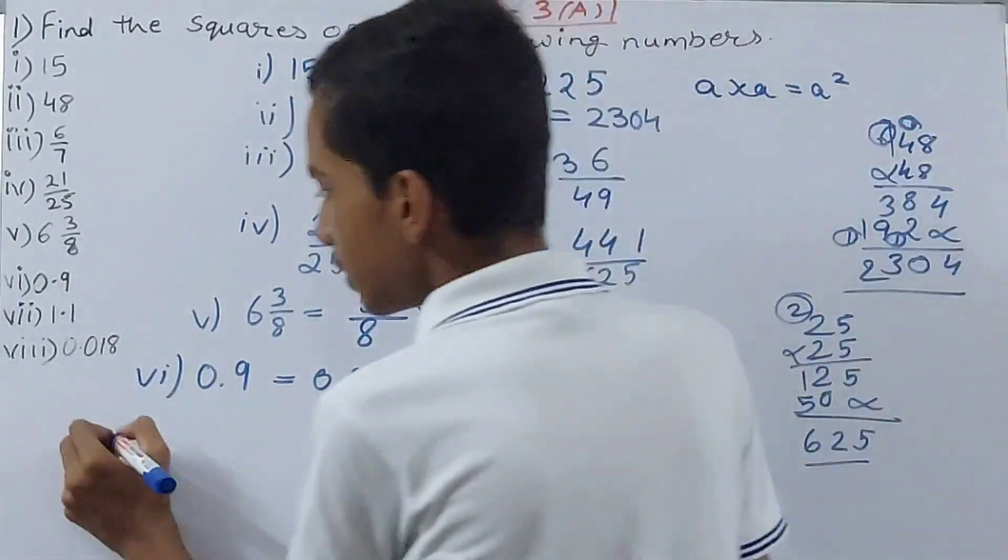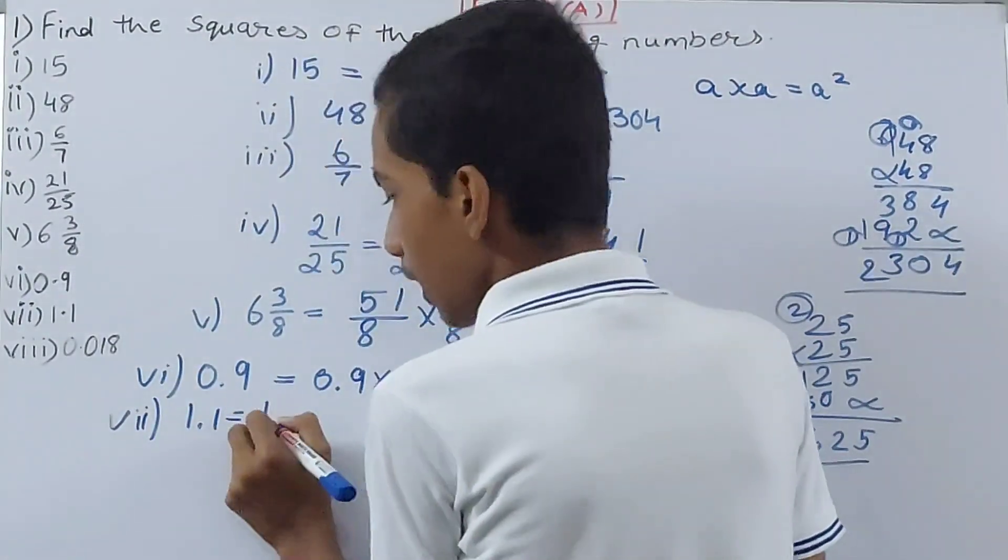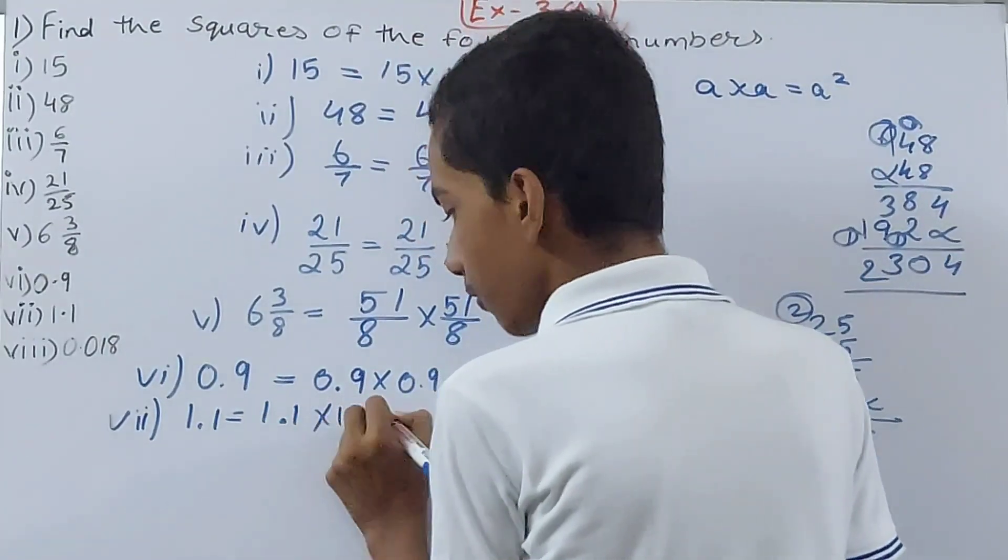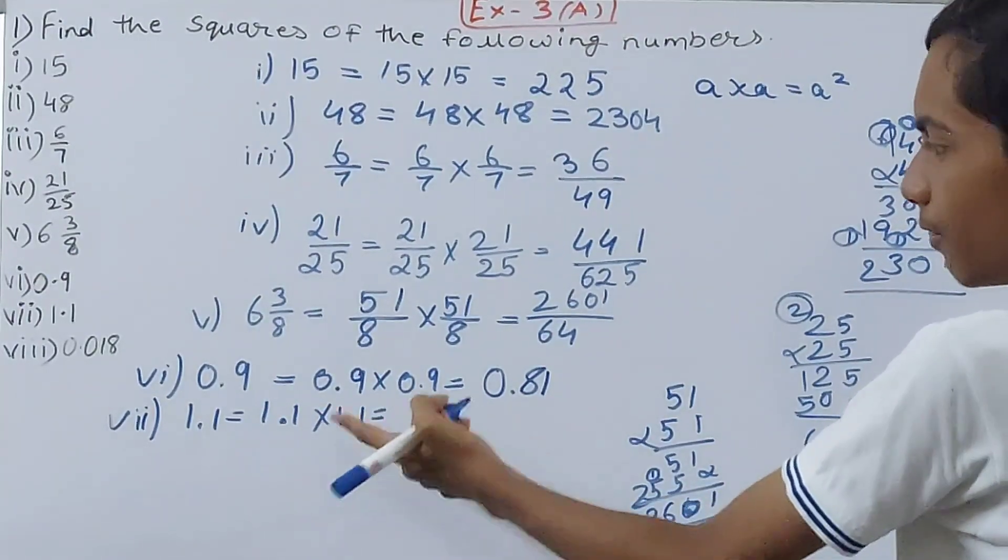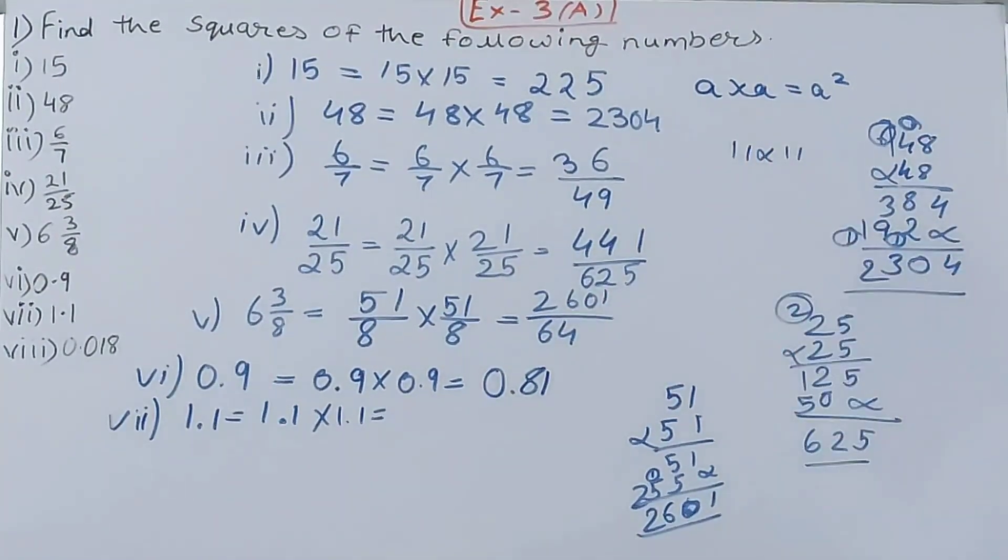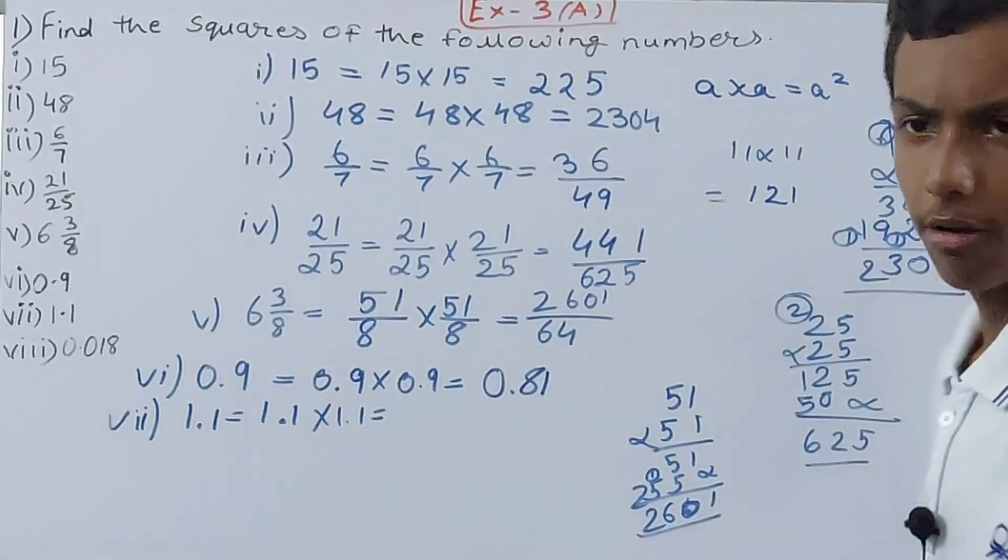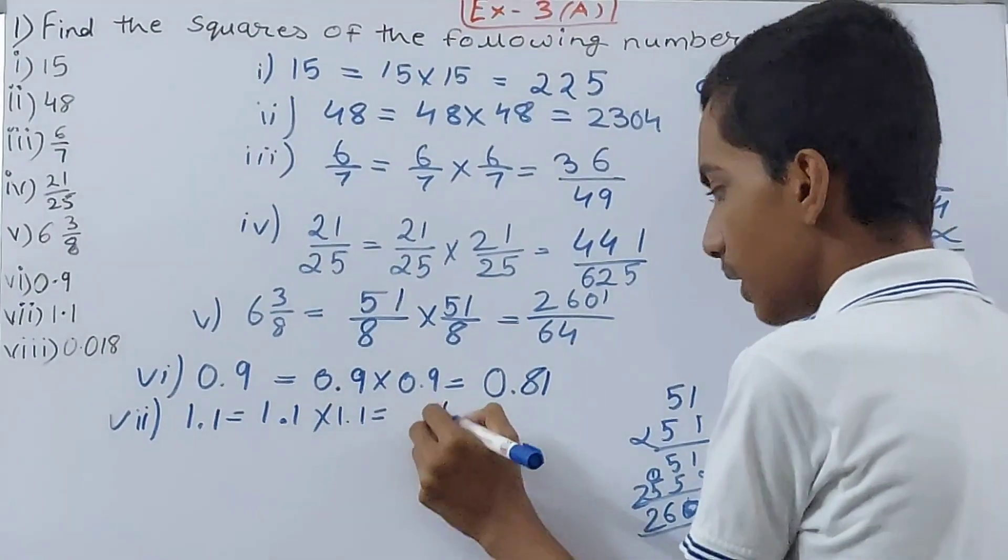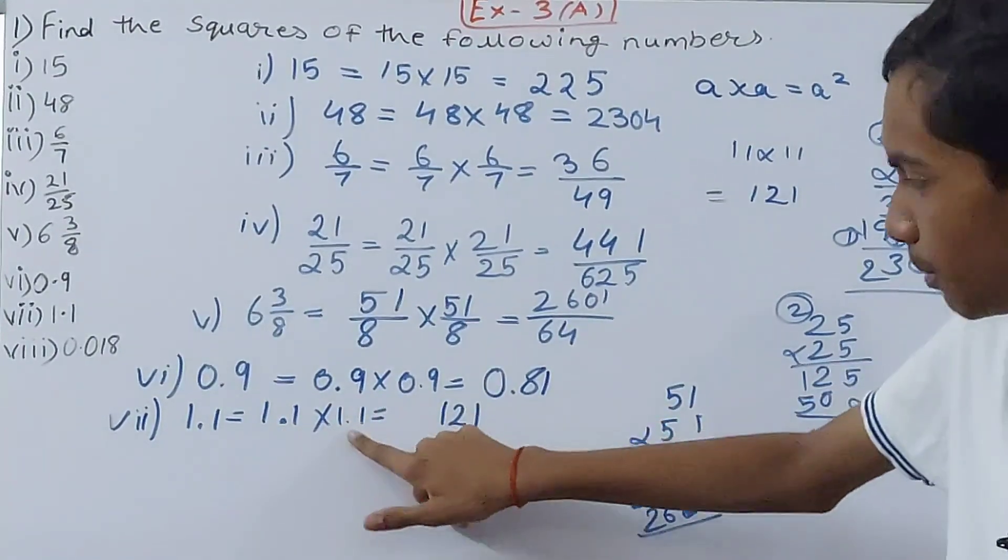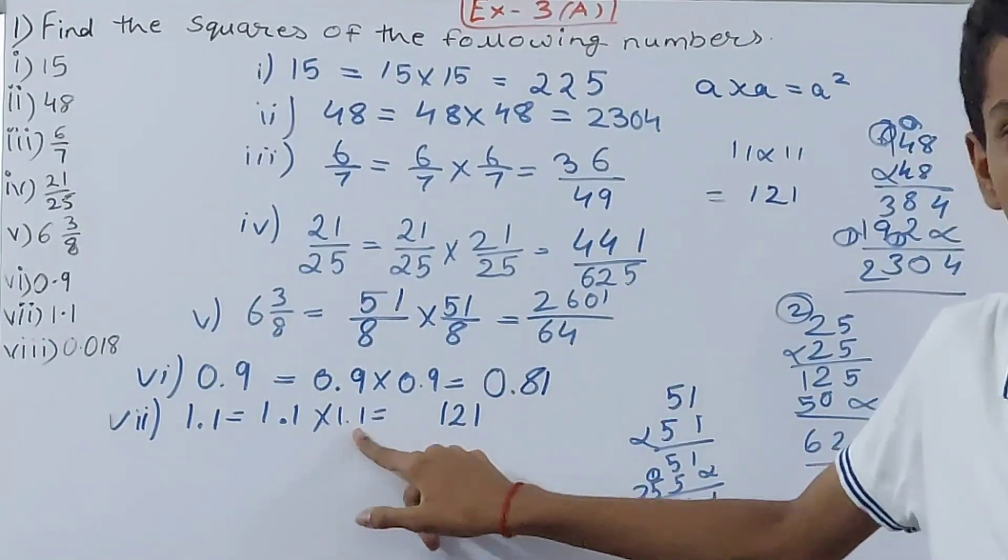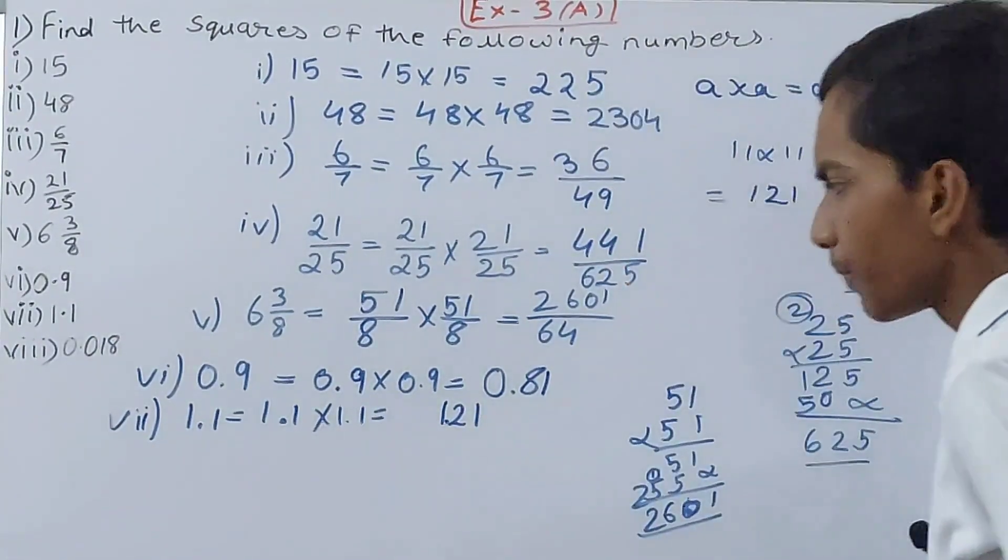Now same here: we have 1.1. This will be 1.1 into 1.1, which is basically if I remove these decimals, 11 into 11, right? So 11 into 11 is 121. Write it down: 1 and 2 and 1. How many decimal places? One decimal place, one more decimal place. How many in total? Two. So put decimal point after two places: 1.21.